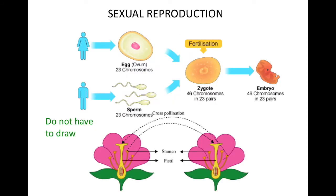You don't have to draw this, but with sexual reproduction, the female gives an egg and the male gives their sperm. Inside each of these we have genetic material from the mom and from the father, and they help create a zygote, which then creates the embryo — and that's how you were born.